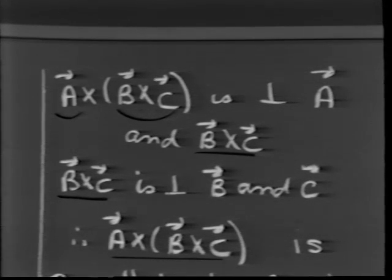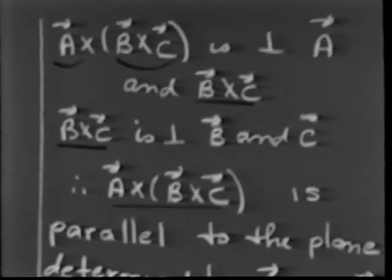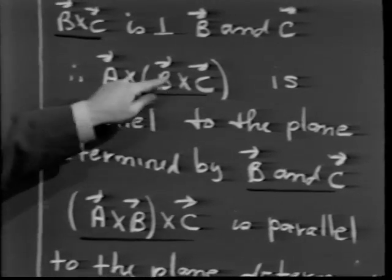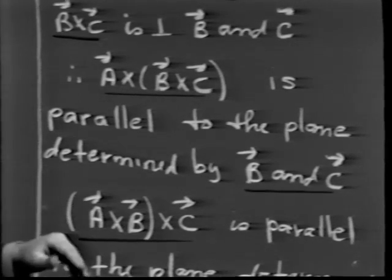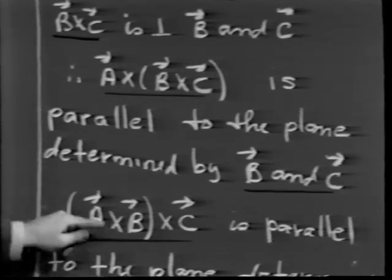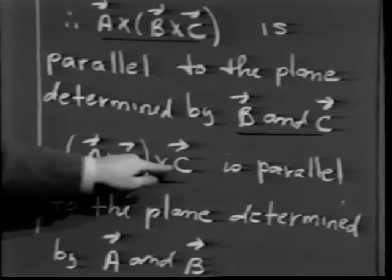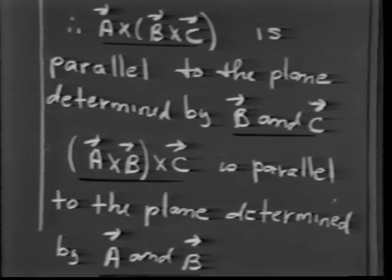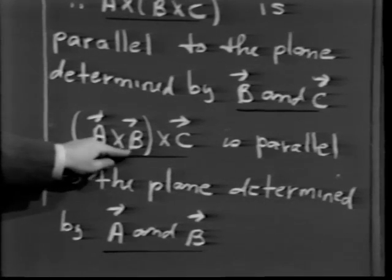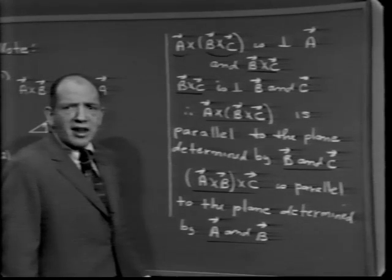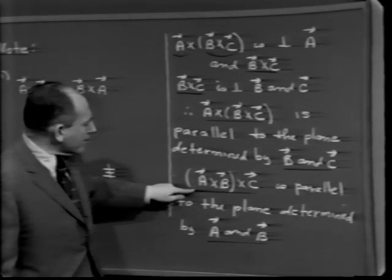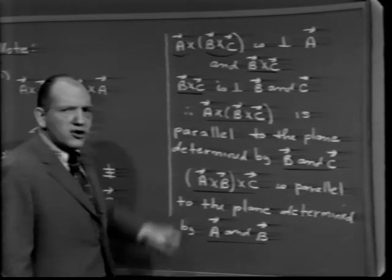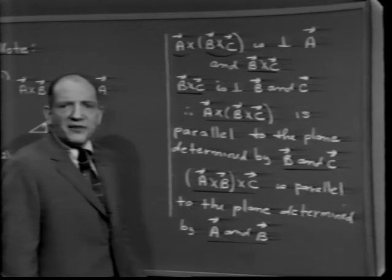Similarly, (a×b)×c is a vector in the plane determined by a and b. There's no reason why the a-b plane and the b-c plane have to be the same plane — the three vectors a, b, and c need not all lie in the same plane. This is why the associative property doesn't hold for cross products: shifting the parentheses shifts the plane in which the vector exists.